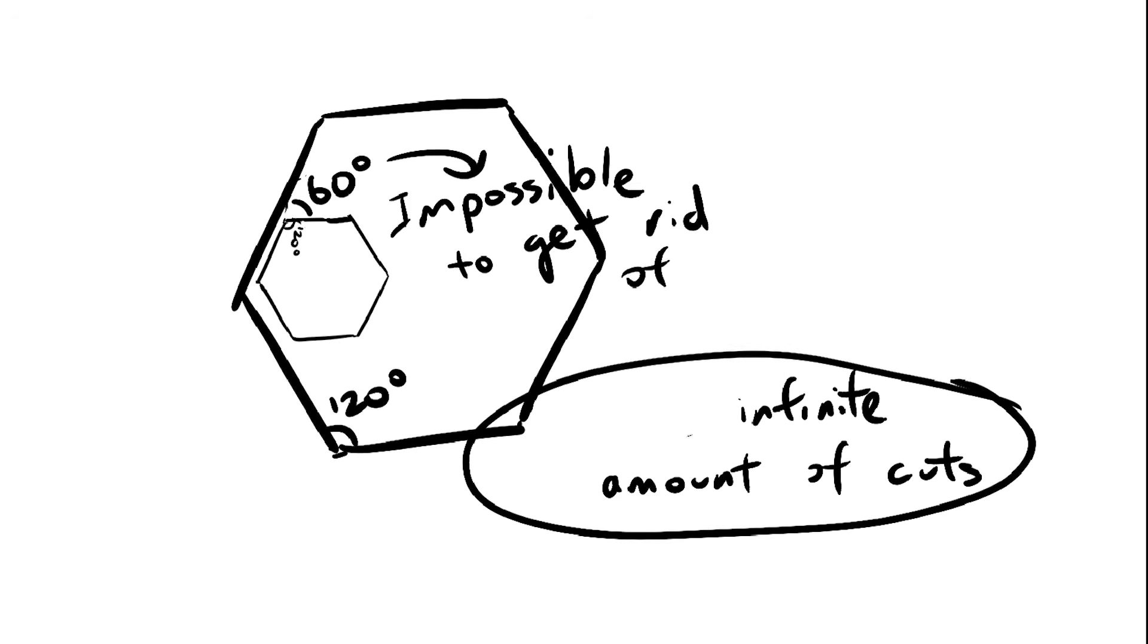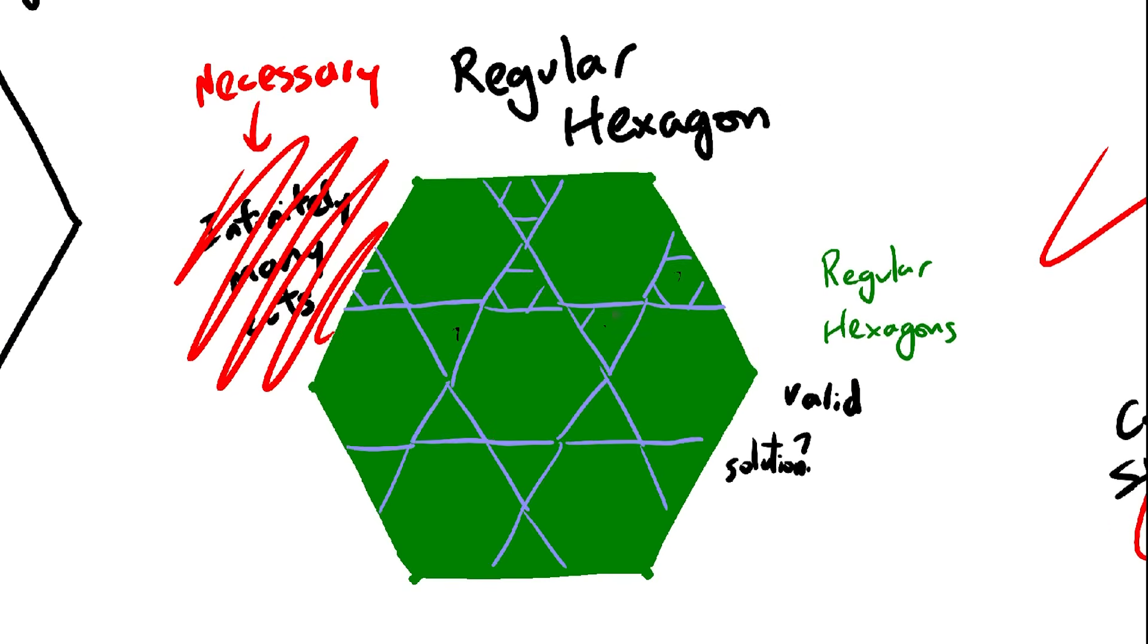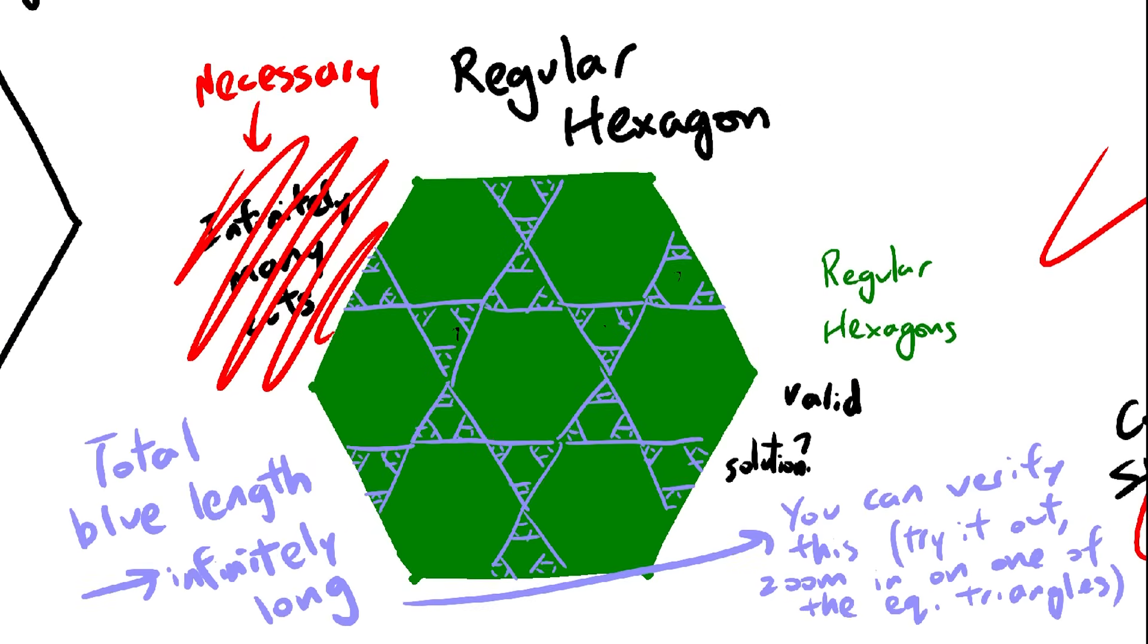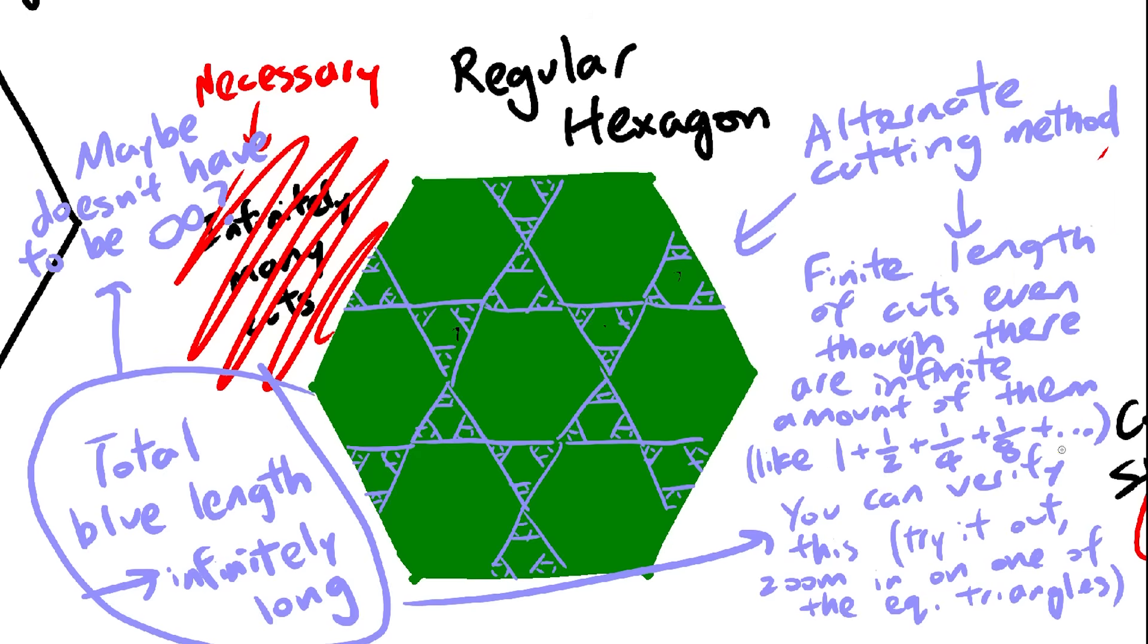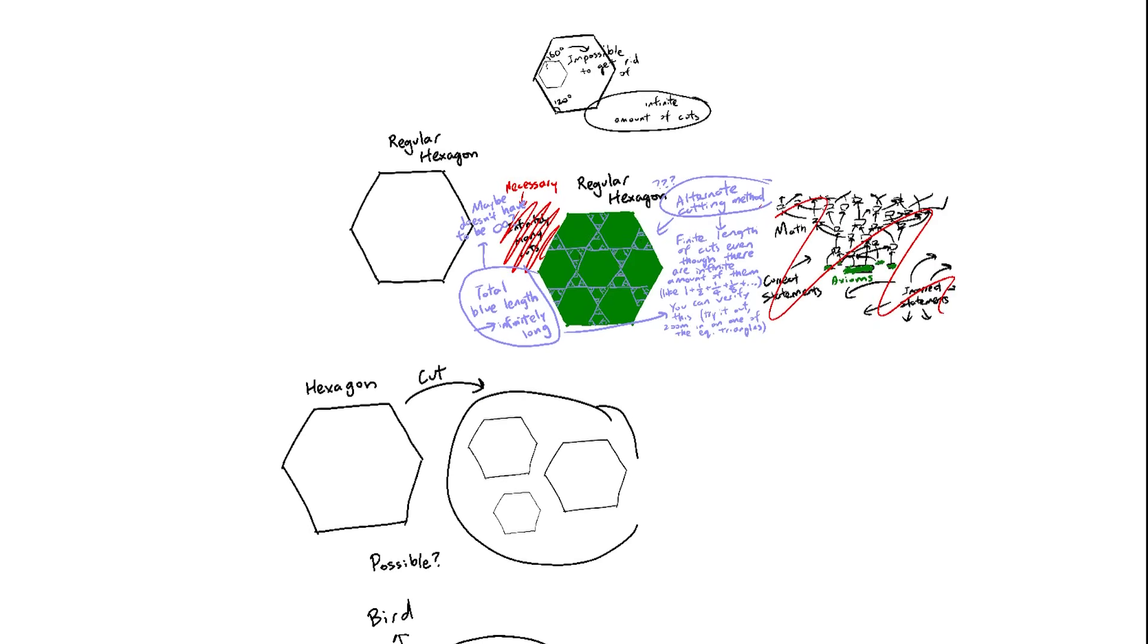Now here's some stuff for you to think about. The total combined length of all the cuts is also infinite, but we haven't proved this, so we've only proved the amount of cuts is infinite. There might be another way to cut the hexagon so that you have infinite cuts, but not infinite length. So is that possible? Well, I don't know, you have fun with that.